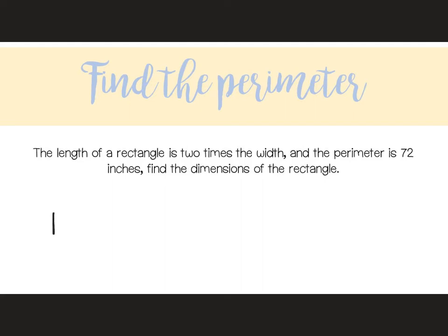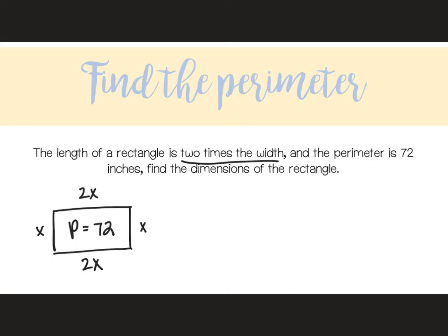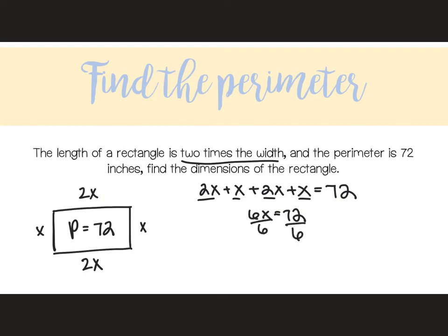Then we have another word problem, so I'm going to want to draw a rectangle. It says the length of a rectangle is 2 times the width, so I'll label the width x and the length 2x. The perimeter is 72 inches. My equation is 2x plus x plus 2x plus x equals 72. When I combine like terms I get 6x equals 72. When I divide both sides by 6, I get x equals 12. Plugging in: the width is 12, and the length is 2 times 12, which is 24.